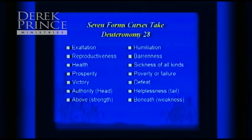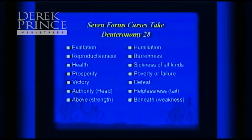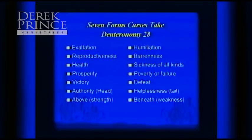The opposite would be the blessings. If a person is under the blessing of God, they are exalted, there's reproductiveness — what they start actually survives. The mark of a person under a curse is constant life miscarriages and stillbirths — what they begin never comes to completion. Under the blessing there's health, prosperity, victory, and authority. They are the head and not the tail. God wants his people to have authority for good — to influence their world for the gospel of Jesus — and to be above and not beneath.